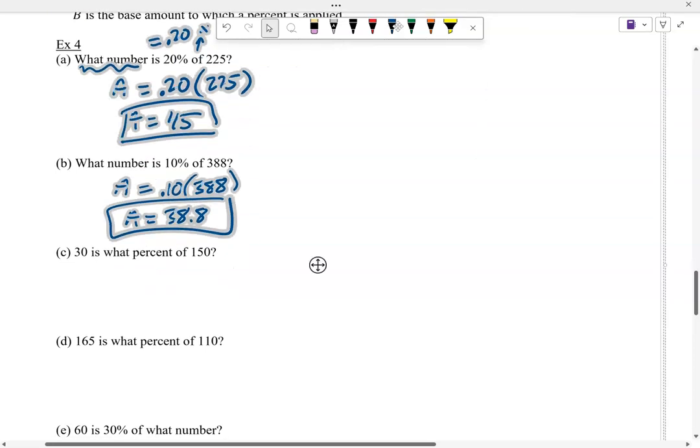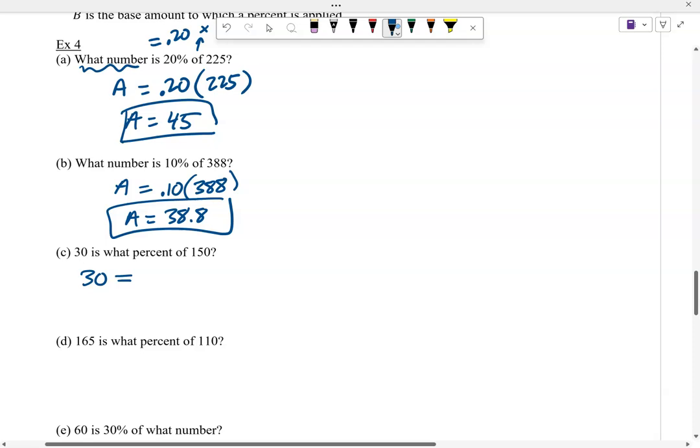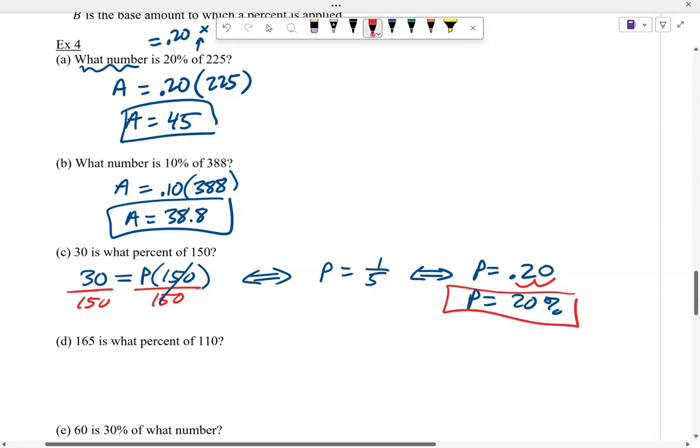A little bit different one. 30 is what percent? I'm going to let that be P of 150. Let's solve for P. This becomes P equals 30 over 150, or 1 fifth. We know 1 fifth to be 0.2, or 0.20. What percent is that? That's 20%, because we've got to convert that, times by 100. So 30 is 20% of 150.